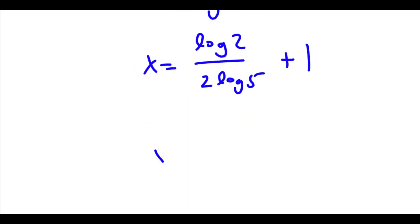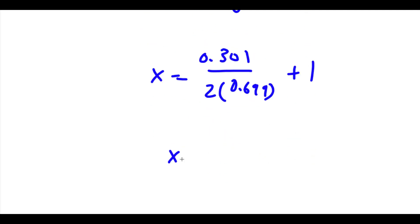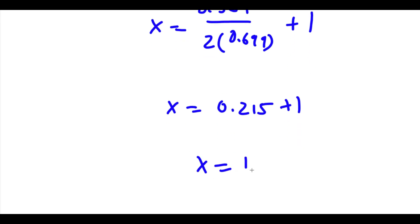Now log 2 is equal to 0.301 and log 5 is equal to 0.699. So now if I divide these two, I get 0.215 plus 1, so our answer is 1.215.